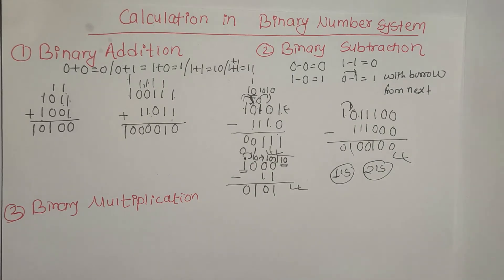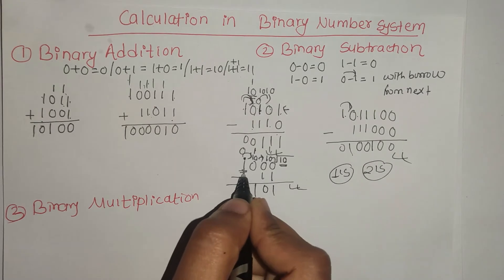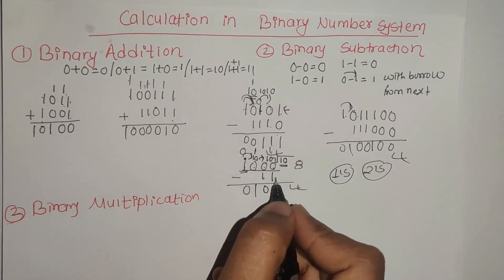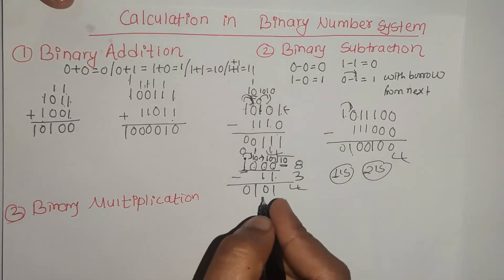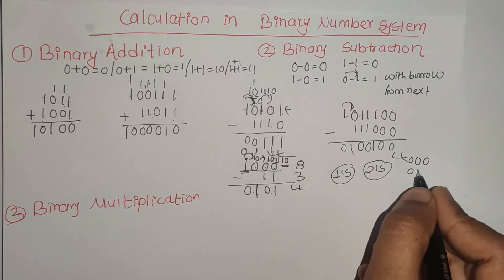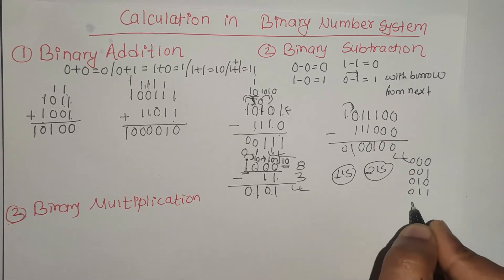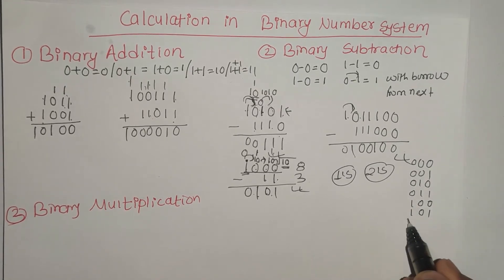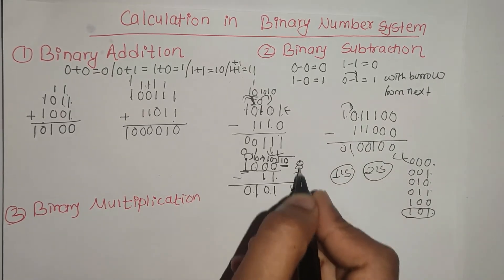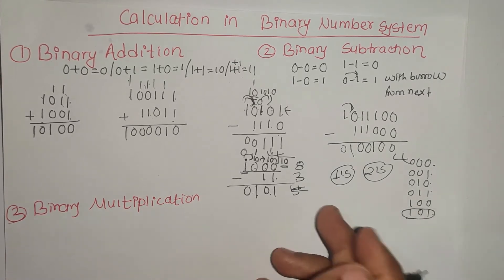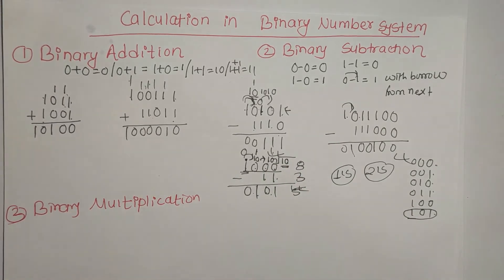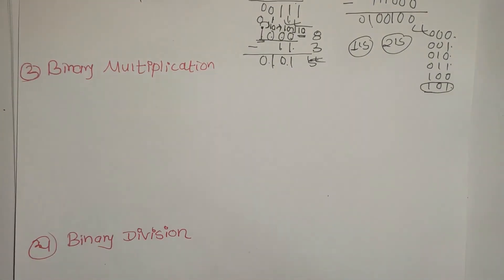We can check this answer by converting to decimal. Then we will look at binary multiplication. In binary multiplication, remember that 1 into 1 is equal to 1, 1 into 0 is equal to 0, 0 into 1 is equal to 0, and 0 into 0 is equal to 0.